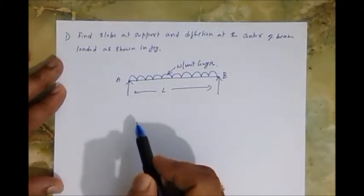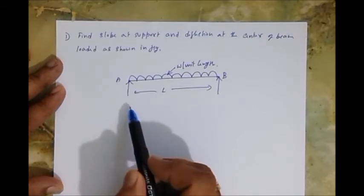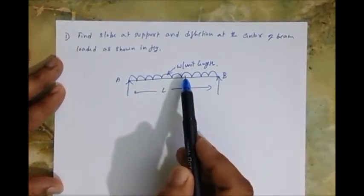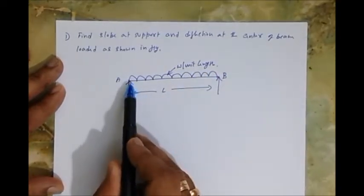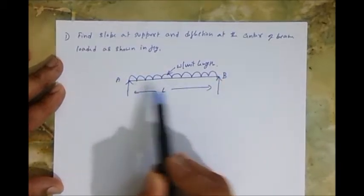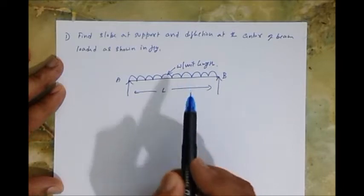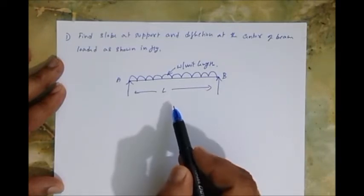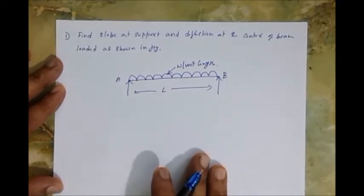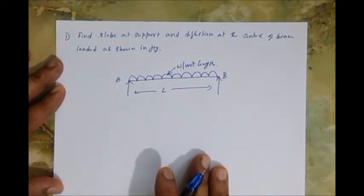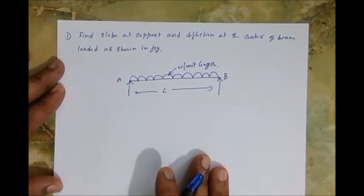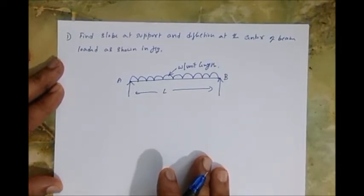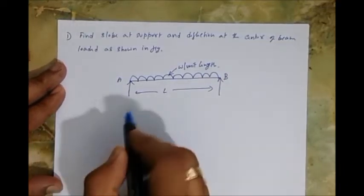Let's find the slope at the support and deflection at the center of a beam loaded as shown. We consider a simply supported beam loaded with W per unit length. We want to know the slope at both supports and the deflection at the center. Since it's a simply supported and symmetrical beam, we'll use two methods: Method 1, the method of integration, and Method 2, using the area of the M/EI diagram.